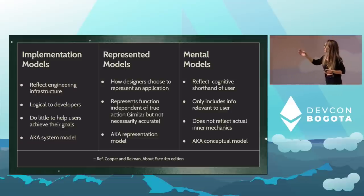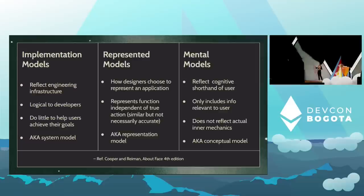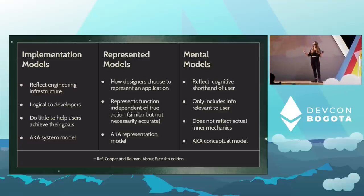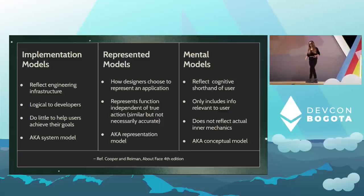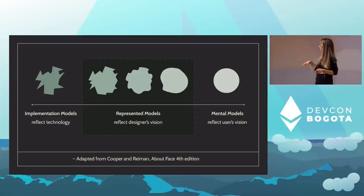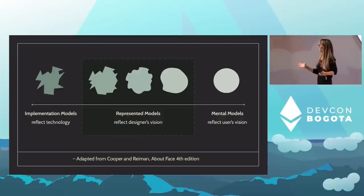Represented models reflect the designer's vision — they know some stuff about the protocol — and mental models reflect the user's understanding; they likely know nothing about the protocol. I really like this chart for visualizing the difference — it's adapted from the book About Face. There are five shapes on this scale — can you identify any of them?